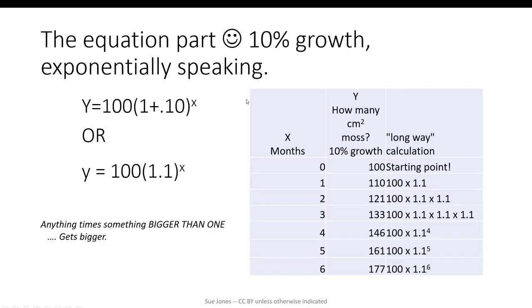Wrapping this up. Each month, we are multiplying by 1.1 again. So to figure out Y, how many square centimeters of moss I have, I take my starting point, multiply it by the growth factor, raise to the x power, the number of months. 10% is the growth rate. That's how much bigger than 100% we're getting. But we need to add that back to the 100% to get our growth factor, what we multiply by.